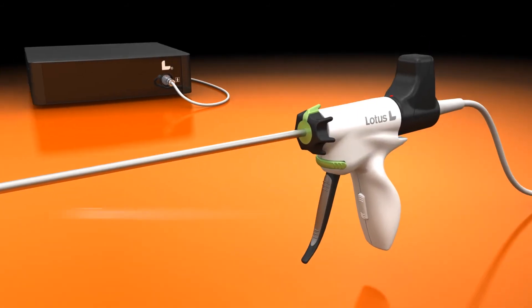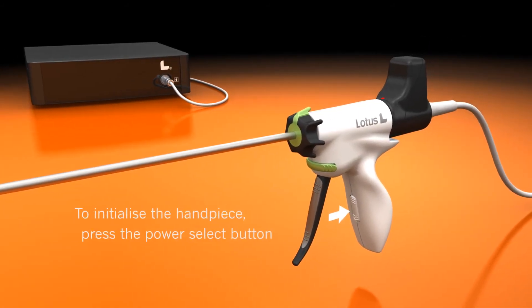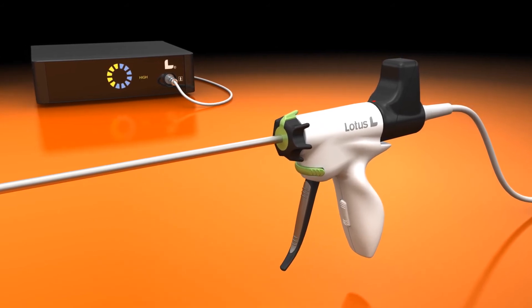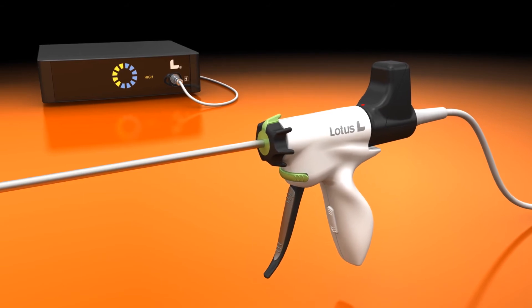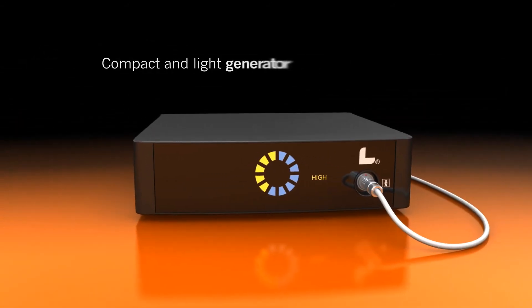To initialise the handpiece, press the power select button. The Lotus plug and play concept comprises a user-friendly instrument and a compact and light generator.